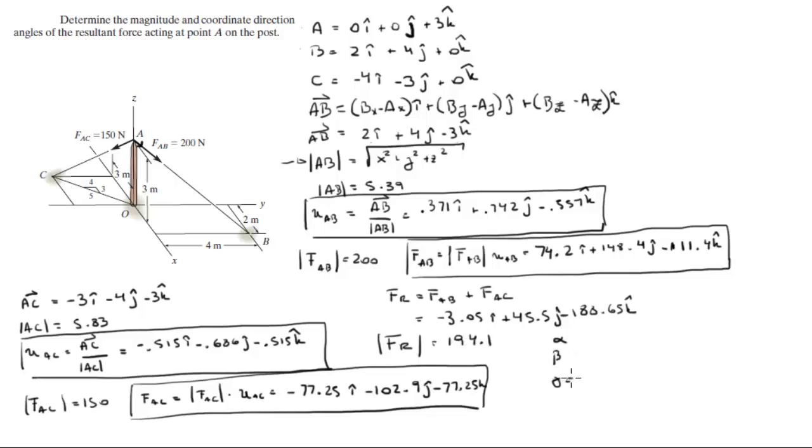And the angles can be found by doing the cosine inverse of the components over the magnitude. X over F of R, Y over F of R, and cosine inverse of Z over F of R. So each of these three values that I'm in the square right now, each of these three values divided by this magnitude, you cosine inverse that fraction that you get. And you're going to get that the angles are 90.9 degrees for the first one, 76.44 degrees for the second one, and 166.4 degrees for the third one.